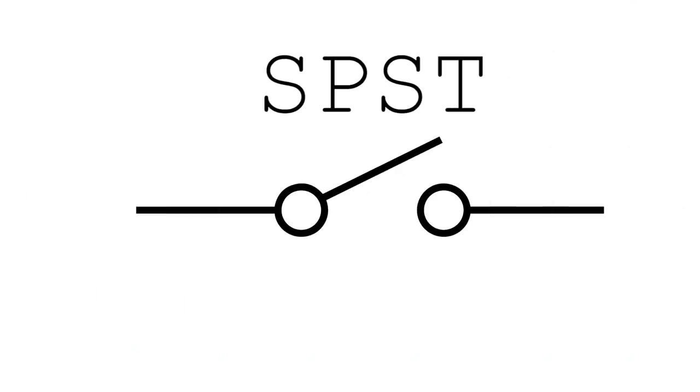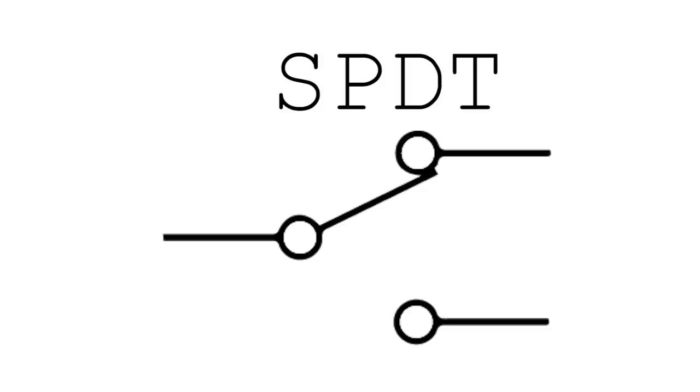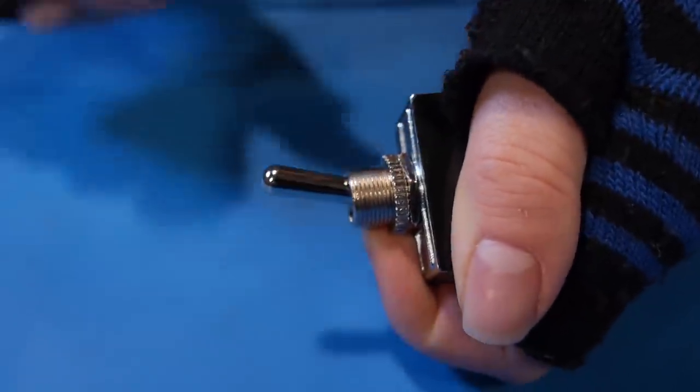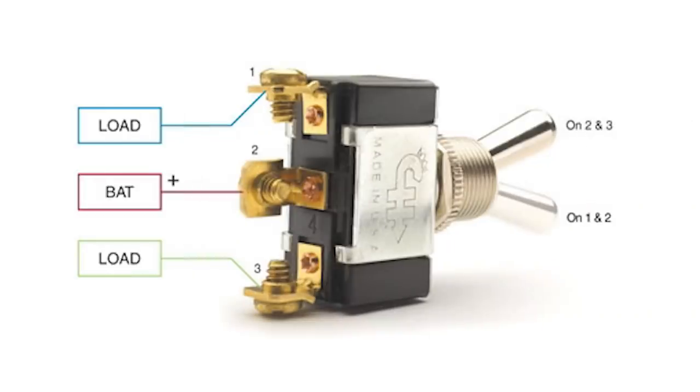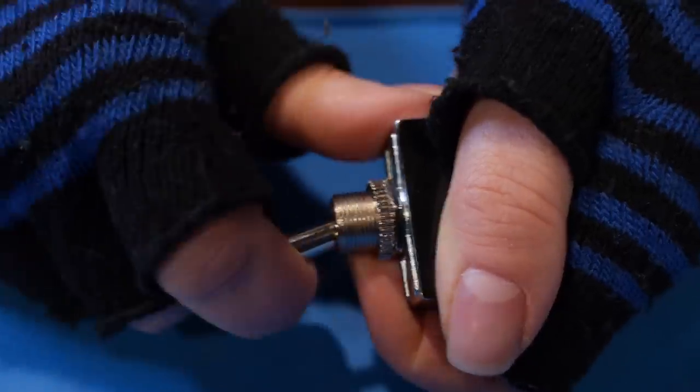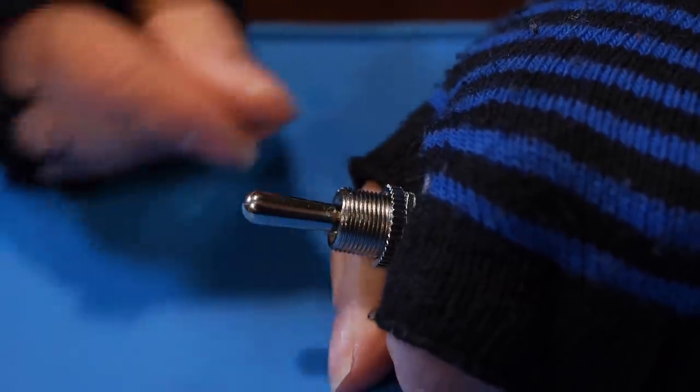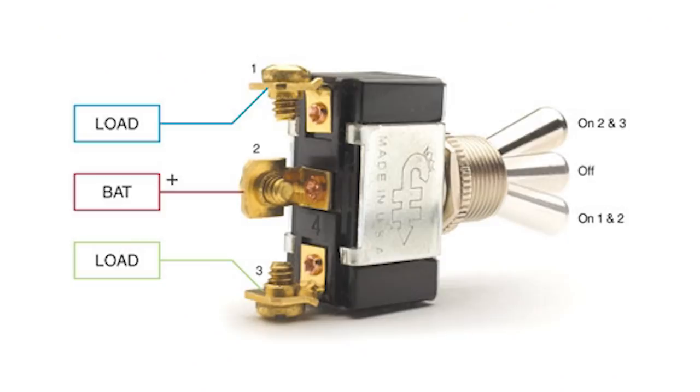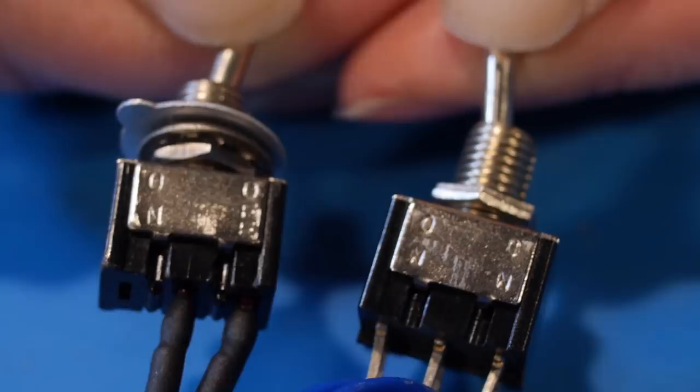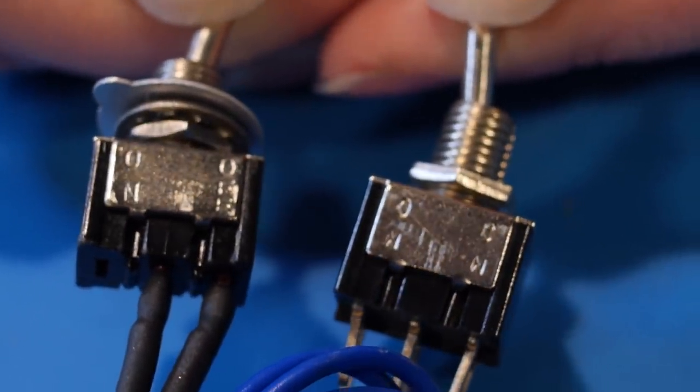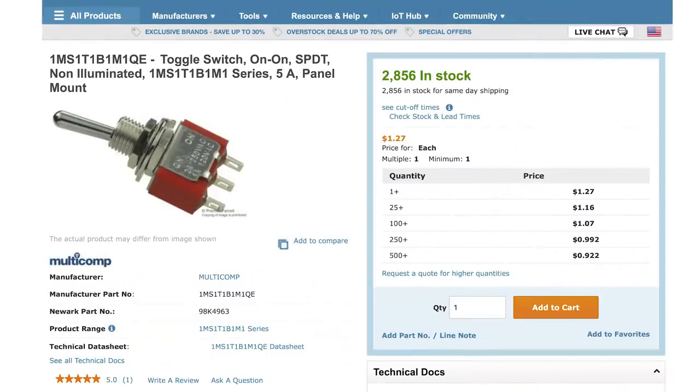An SP-ST switch has one possible connection and two positions, open or closed. An SP-DT switch can make two possible connections. However, it could have two or three positions: closed closed, or closed open closed. An SP-DT with only two positions is an on-on switch. SP-DTs with three positions have a resting point between the two contacts where no connection is made, and is known as on-off-on. Sometimes the on-on or on-off-on is marked on the switch, but that is not always the case. It's always best to check the product page or datasheet for this information.